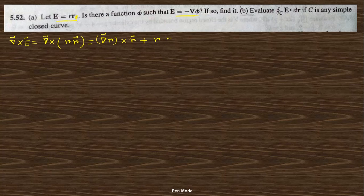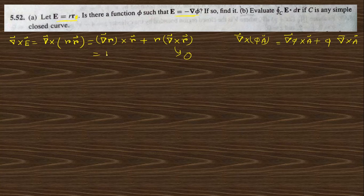Using the formula: curl of phi·A = grad phi cross A + phi curl A. Here curl of r vector is 0, so the expression reduces simply to the derivative term. The derivative of r^4 is 4r³ times r cap cross r — but since r cap cross r gives zero, this whole expression becomes 0. So the curl of E is 0, meaning E is conservative.